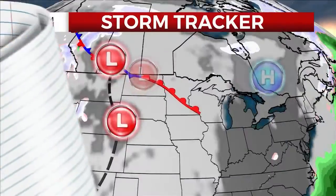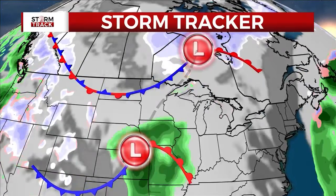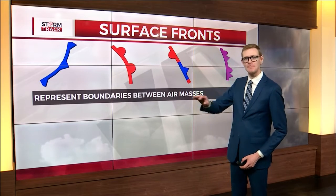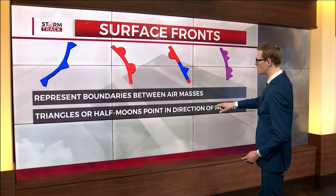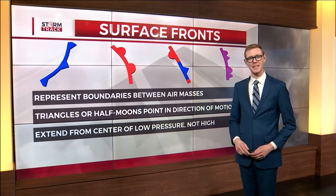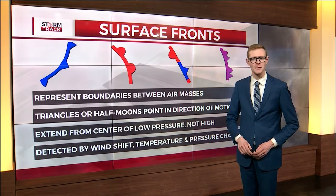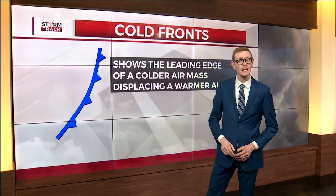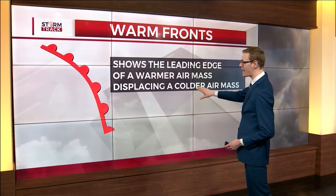Okay, awesome. Let's take a look. A front is detected by a wind shift, changes in temperature, and changes in pressure. A cold front is a blue line with triangles. This shows the leading edge of a colder air mass displacing a warmer air mass. A warm front is a red line with half moons, showing the leading edge of a warmer air mass displacing a cooler air mass.